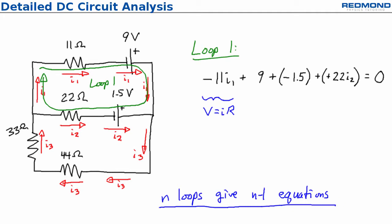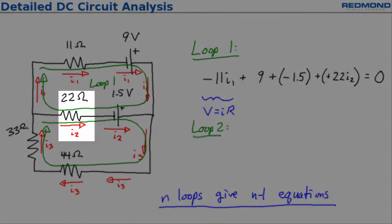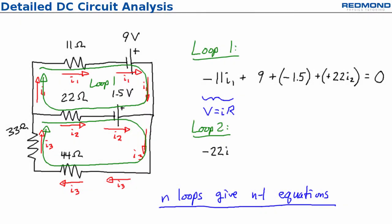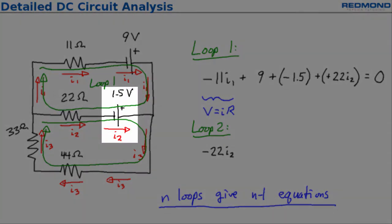I'll choose the small bottom loop, again going clockwise from the upper left. The 22 ohm resistor is first and the loop is in the direction of I2, so I start the equation with negative 22I2. Then I go from negative to positive across the 1.5 volt EMF, so I add 1.5.